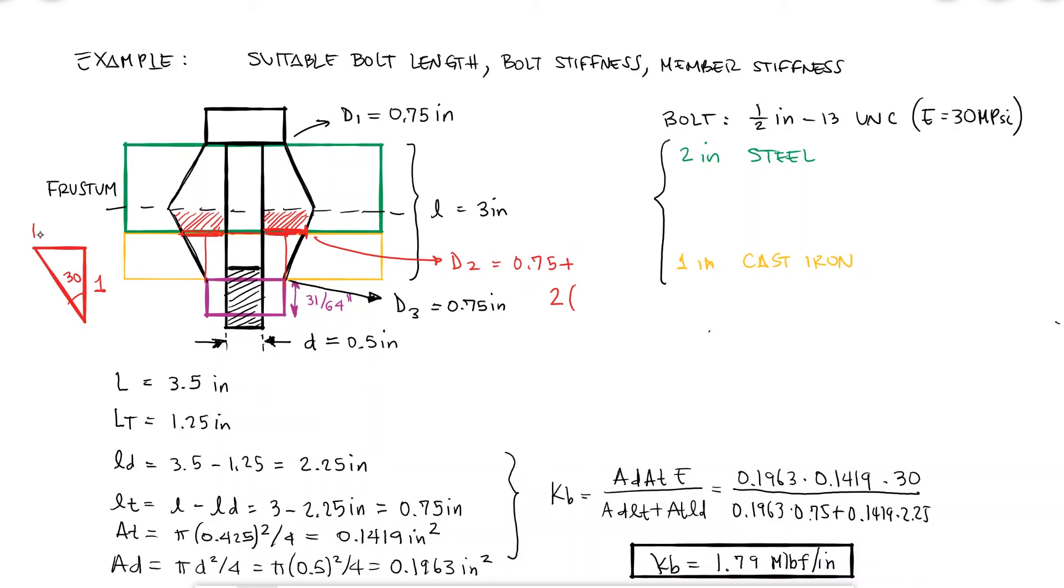Capital D for k2 would be equal to 0.75 plus 2 times 1 tangent of 30. The thickness values t's for k1, k2, and k3 would be 1.5, 0.5, and 1, respectively.